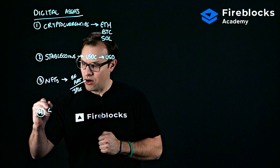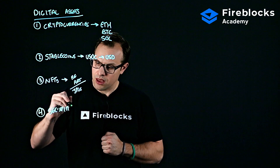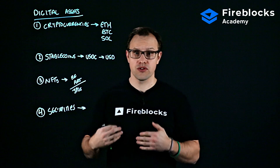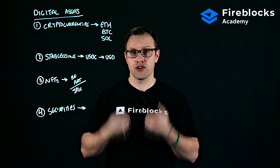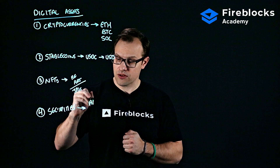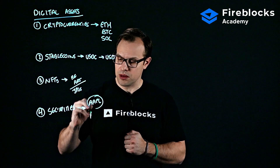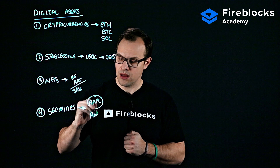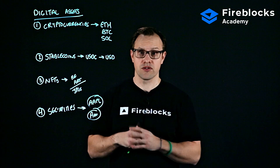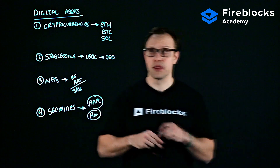The fourth type is security tokens. Security tokens are essentially tokenized versions of traditional financial markets instruments. This could be stocks, bonds, or a variety of other financial markets instruments, and these will essentially live on the blockchain.